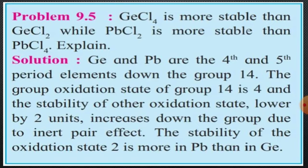This is the statement we are supposed to explain. Here is the solution. Germanium and lead are the fourth and fifth period elements down group 14. As we move down group 14, that is your P block elements, germanium belongs to the fourth period while lead belongs to the fifth period of the modern periodic table. Both are from the same group, that is group 14.